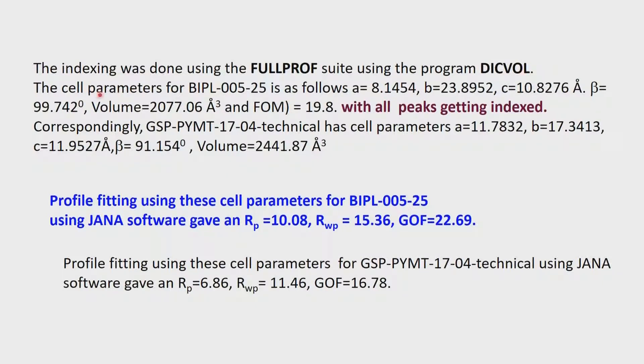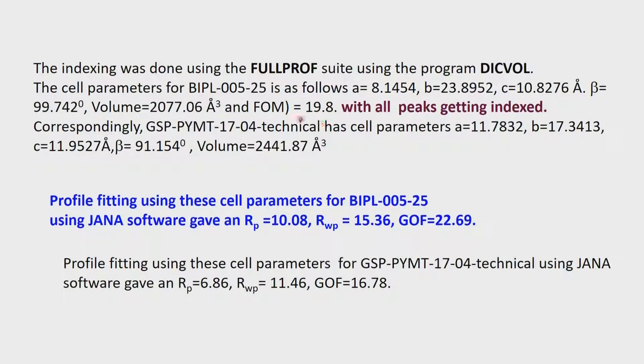The cell parameters of the company compound are a = 8.1, b = 23.8, c = 10.8, β = 99.7°, and the volume is 2077. The figure of merit — which tells you how well these cell parameters have been fitted using the profile refinement — was calculated. We did a profile refinement, got the cell dimensions by indexing, and then calculated the figure of merit. A reasonably high value is desirable; it is 19.8, and the larger the value the better the fit.